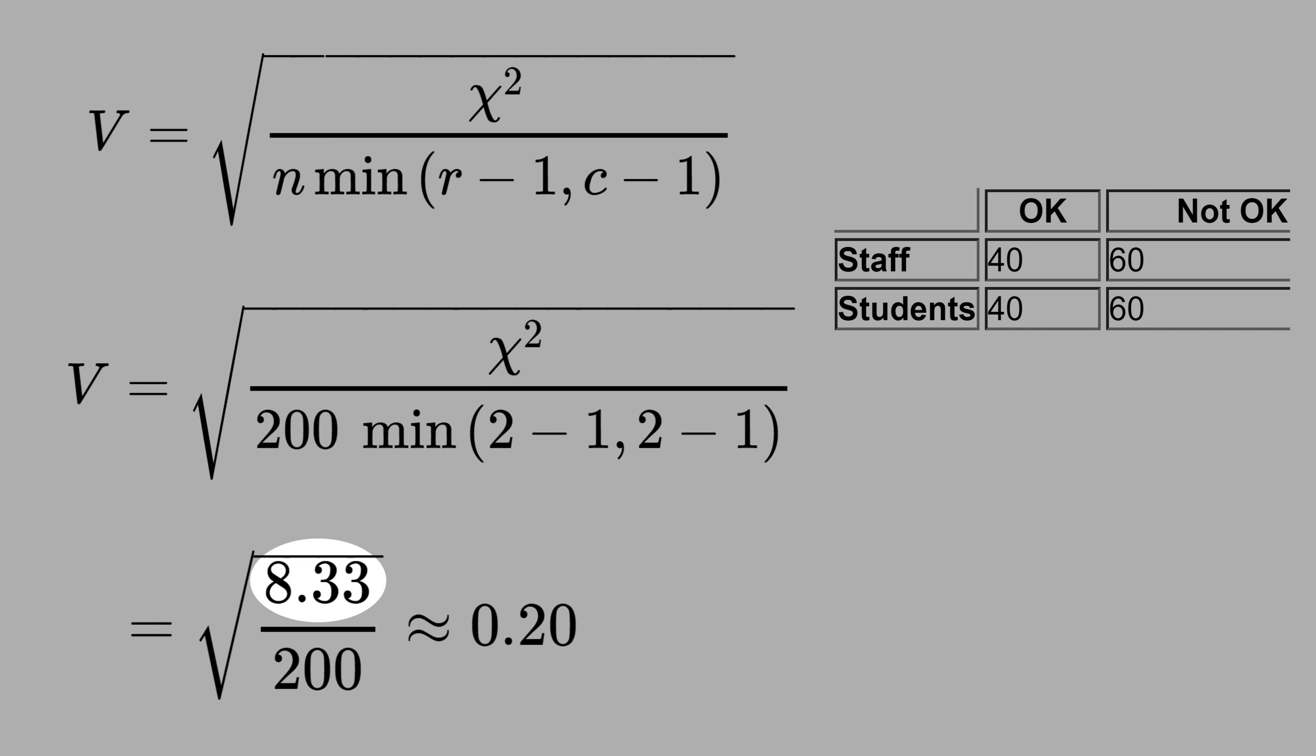Then we do the chi-square that you calculated in the previous slide and divide by 200 and take the square root. And you get 0.2.